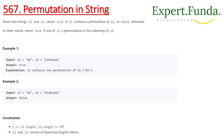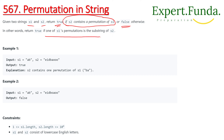Given the permutation in the string problem — we have two strings s1 and s2. We have to return true if s2 contains the permutation of s1. In other words, return true if one of the s1 permutations is a substring of s2.